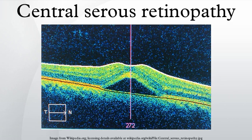Central serous retinopathy, also known as central serous chorioretinopathy, is an eye disease which causes visual impairment, often temporary, usually in one eye. When the disorder is active it is characterized by leakage of fluid under the retina that has a propensity to accumulate under the central macula. This results in blurred or distorted vision.